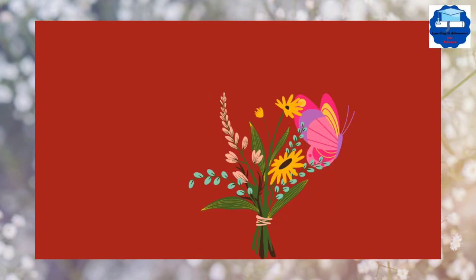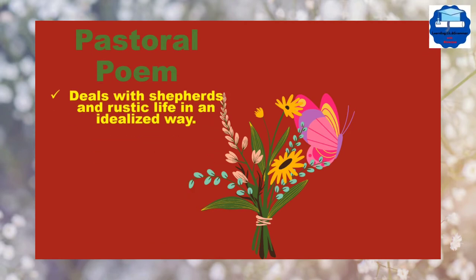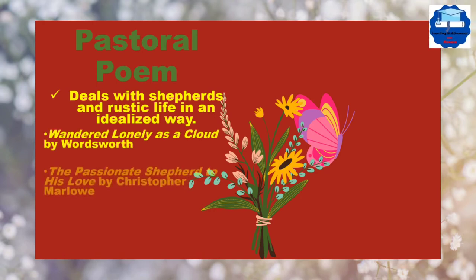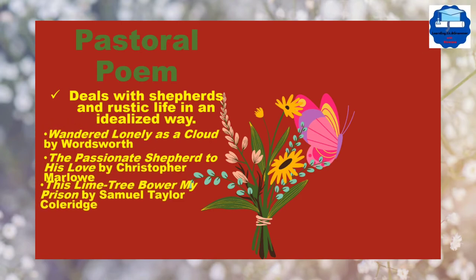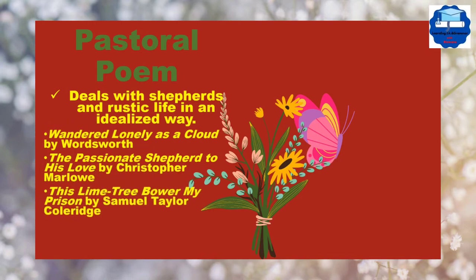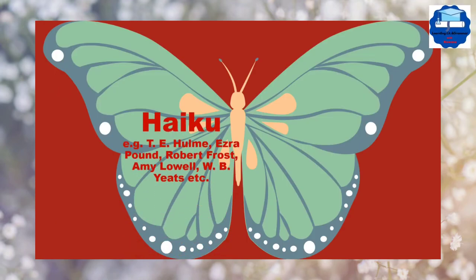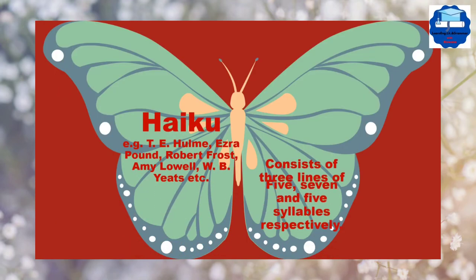Pastoral poem deals with the shepherds and rustic life in an idealized way. For example, Wandered Lonely as a Cloud by Wordsworth, The Passionate Shepherd to His Love by Christopher Marlowe, and This Lime Tree Bower My Prison by Samuel Taylor Coleridge. The next one is Haiku. It consists of three lines of five, seven and five syllables, respectively.